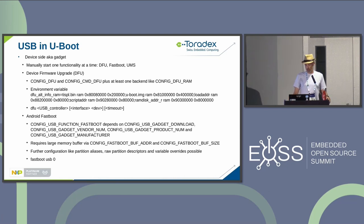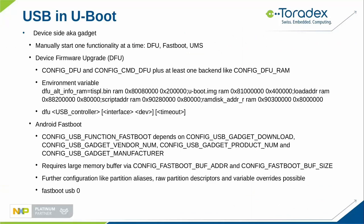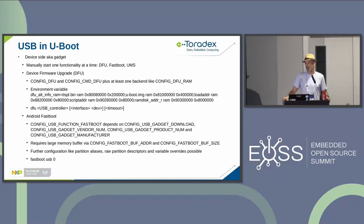Android fastboot is another common option and is much faster for loading bigger images — especially relevant for Android phones with gigabyte-sized images where DFU would take hours. You configure the relevant options, note that it requires a bigger buffer, and must set fastboot_buffer_addr and fastboot_buffer_size. Further configurations are possible for partition aliases, partition descriptors, or overriding variables. Start it with the fastboot command, specifying USB and the instance number.